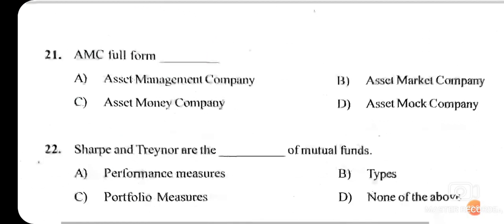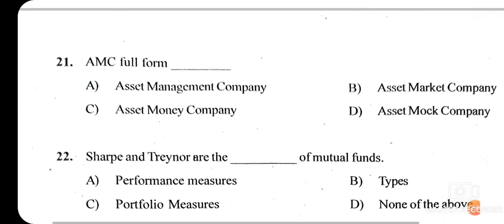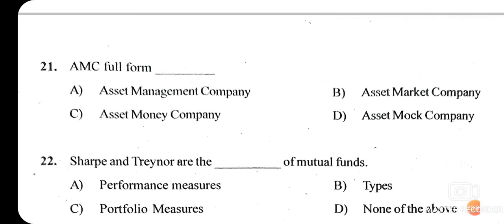Question twenty-one: AMC full form. While AMC can sometimes mean Annual Maintenance Contract, in the context of financial education and investment management, AMC stands for Asset Management Company — option A is the right answer.